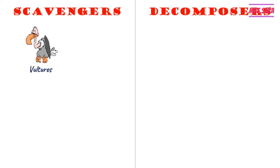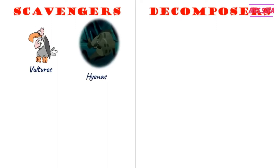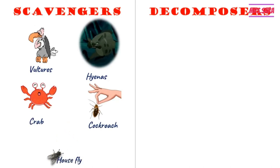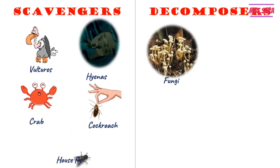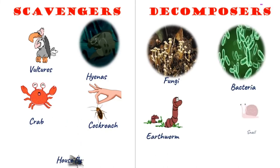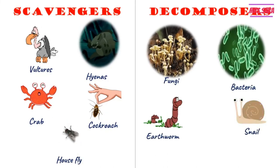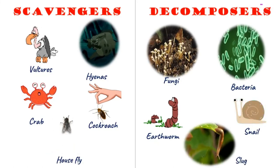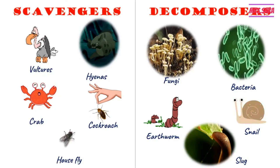Here are examples of scavengers and second decomposers. Scavengers include vultures, hyenas, crabs, cockroaches, and houseflies. The decomposers include fungi, bacteria, earthworms, snails, and slugs. Those are the examples for scavengers and decomposers.